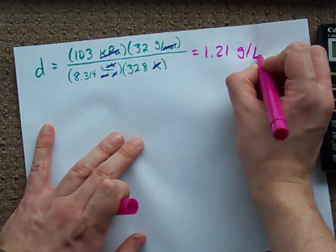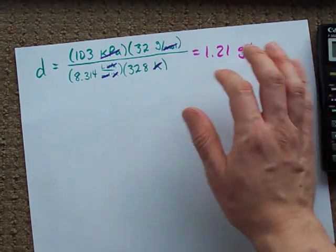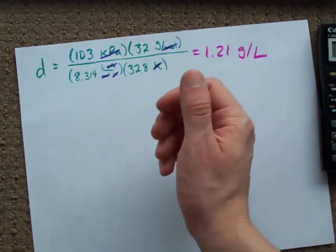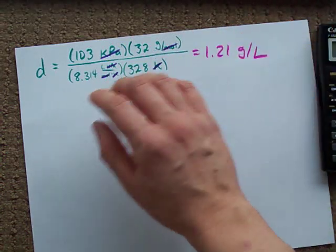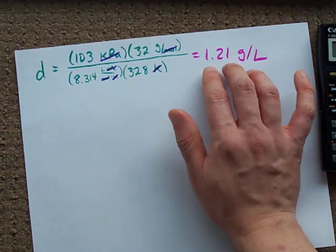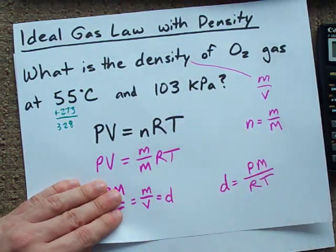May not seem like a lot, but remember, you're dealing with a gas here. If you have a 1 liter balloon, how much is it actually going to weigh? Probably the amount of the rubber plus like a gram or so. This here is the density of oxygen gas at 55 and 103 kilopascals.